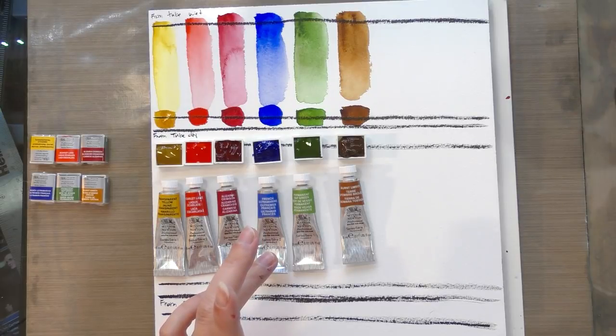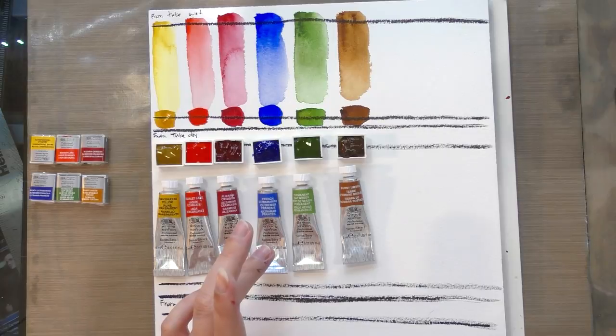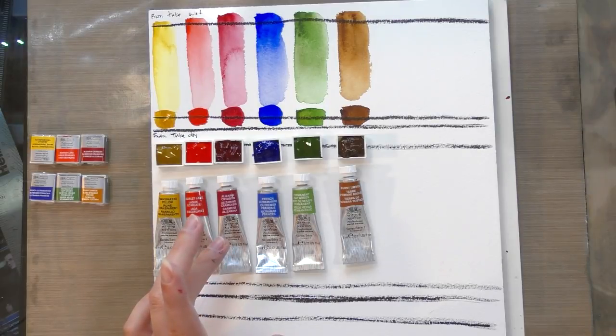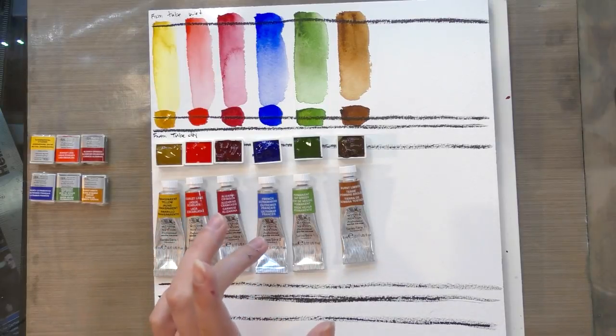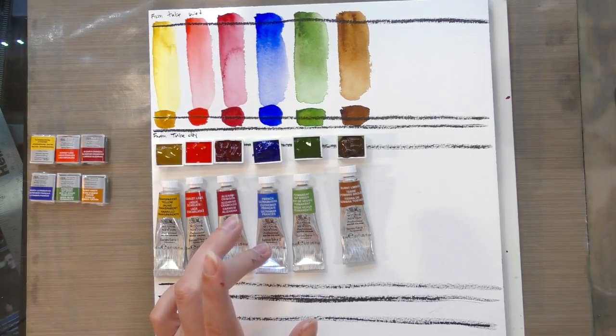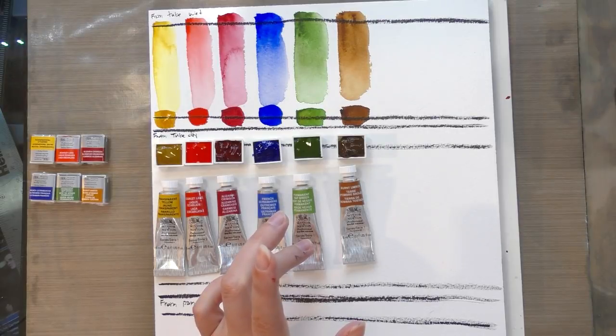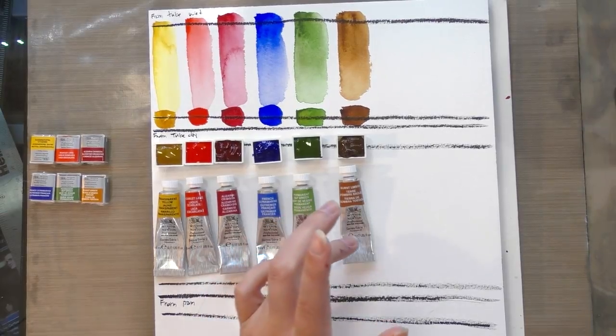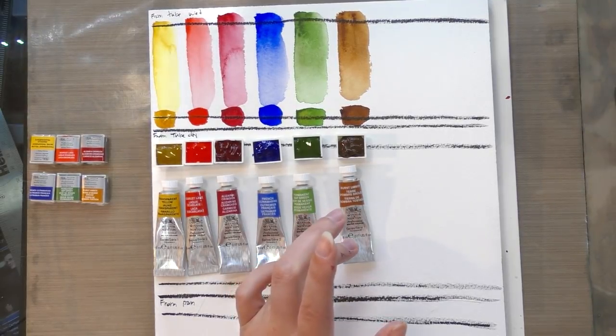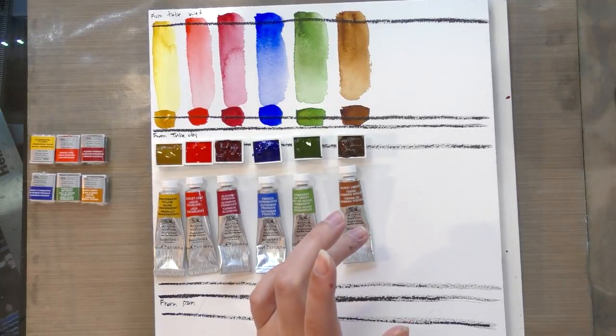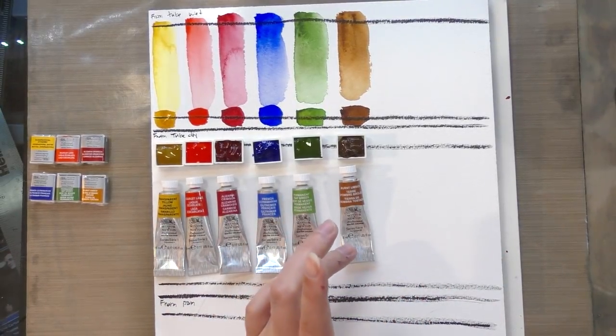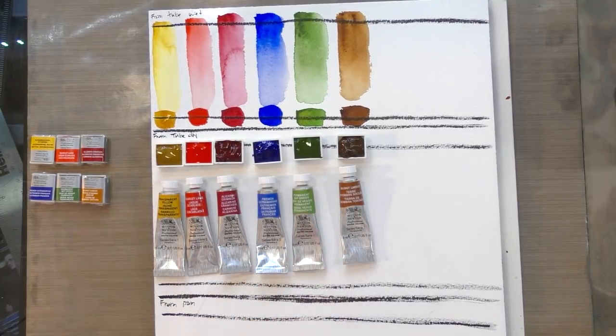French ultramarine PB 29 series two, transparent. Oh, I'm sorry, I skipped alizarin crimson. My mistake. Alizarin crimson, PR 83 series one transparent. And the light fastness is not listed on the tube. So I'm going to do a little bit of digging before I say goodbye. French ultramarine PB 29 series two transparent with a light fastness of one. Sap green PG 36 PY 110, series one, transparent with a light fastness of one. And burnt umber PBR 7 and PBR 101 and PY 42. So it is the only color that I tested today that has three pigments. The only other one with multiples has only two. Usually you want to go for colors that have fewer pigments. They're going to mix a little cleaner. It is series one, transparent and has a light fastness of one.